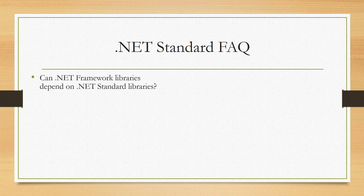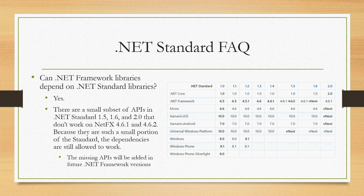Can .NET Framework libraries depend on .NET Standard libraries? Yes, that is the promise of .NET Standard — it can be used from Xamarin, .NET Framework, UWP, .NET Core, and it will work. We have a table showing the different versions of .NET Standard along the top and which versions of different runtime profiles can use that version. So if you have a library targeting .NET Standard 1.3, you could use it from a .NET Framework 4.6 library or app, or from Xamarin iOS 10.0 and Android 7.0. You could not use it with Windows 8 or Windows Phone 8 because .NET Standard 1.3 contains APIs those platforms don't support.